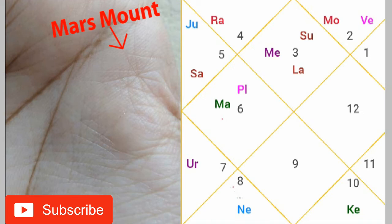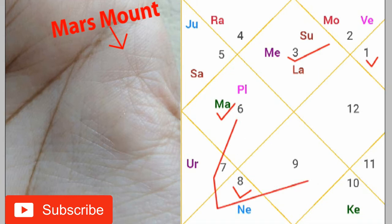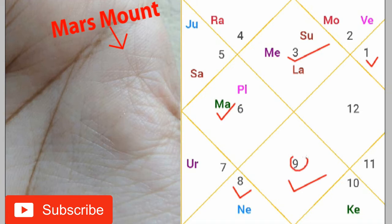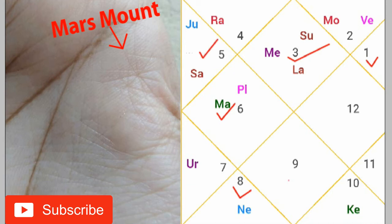As you can see in this horoscope, Mars is the lord of the sixth house and eleventh house, and is present in the fourth house. Mars gives very bad results in Gemini ascendant. Mars also makes the native Mangalik, but still this person is a government contractor in NHAI. Mars' first drishti is on the seventh house, which is spoiling the marriage and partnership. Mars' second drishti is on the tenth house, which is the karma house.